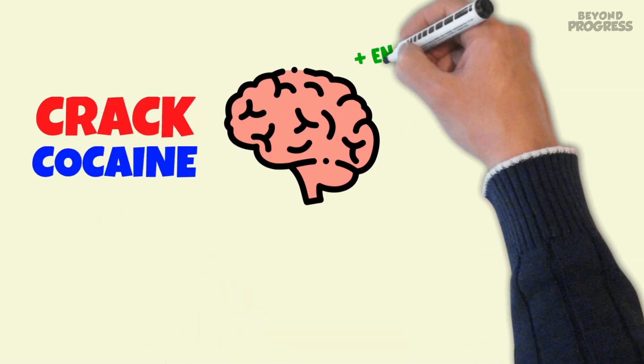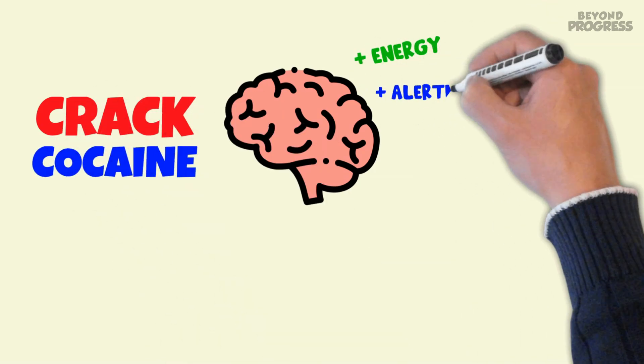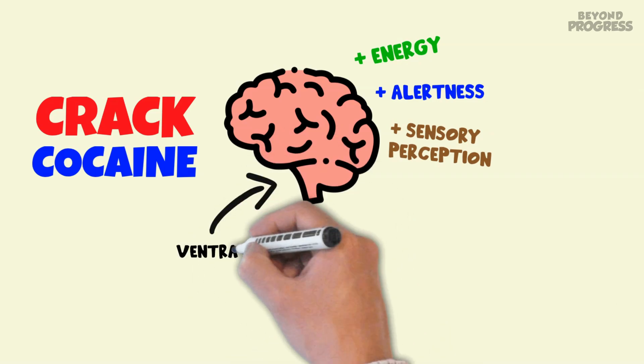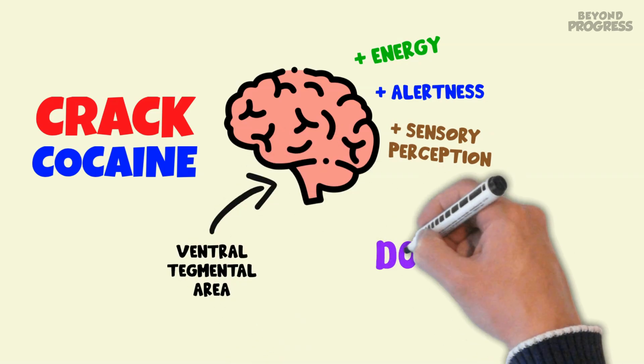In the brain, crack and cocaine are identical. Users initially experience heightened energy, alertness, and sensory perception. Crack targets the ventral tegmental area, releasing significant amounts of dopamine, the neurotransmitter linked to pleasure and euphoria.